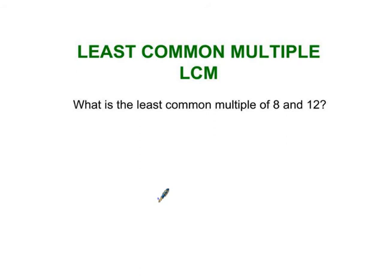To find the least common multiple or lowest common multiple, you're going to list the multiples of both numbers and then pick the smallest number in each list. Multiples are numbers that you get by skip counting that number, so we're going to skip count by eights first.